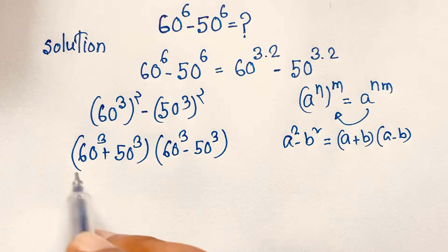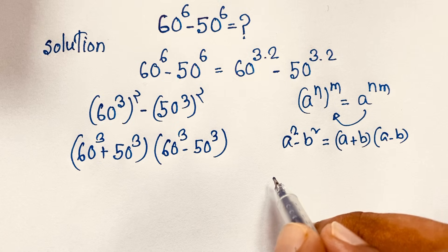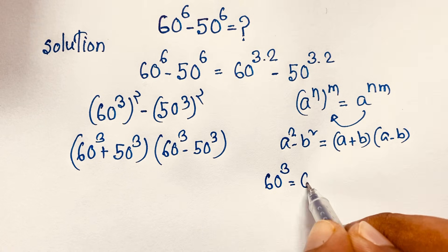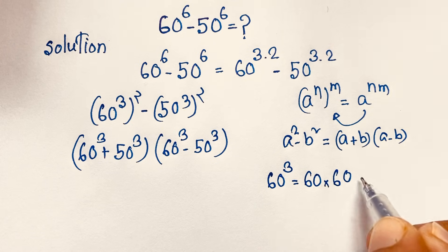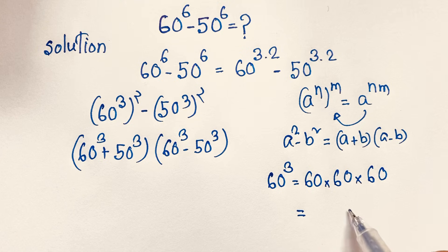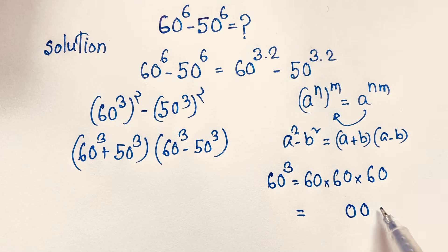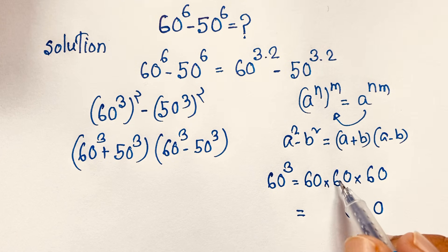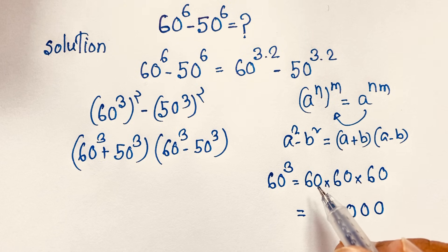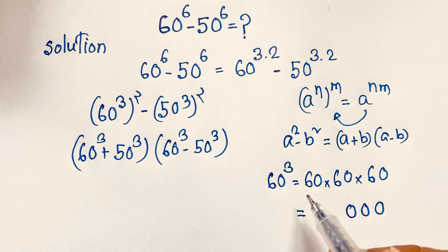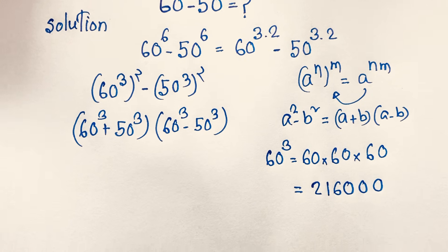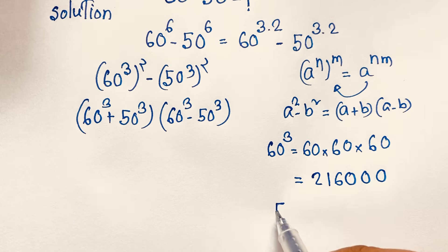Now let's simplify 60 power 3. That is 60 times 60 times 60. There are three zeros, and 6 times 6 is 36, then 36 times 6 is 216. So 60 cubed equals 216,000.